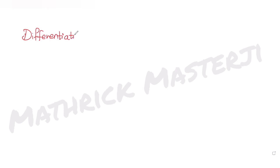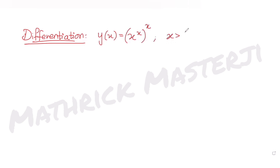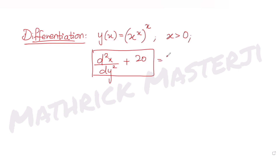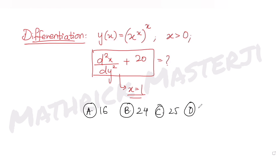Hi guys, I hope you are all doing well. Today's question is from the topic of differentiation. A function y(x) is equal to x raised to x, the whole raised to x, where x is positive. We have been asked to find the value of the expression d²x/dy² + 20 at x equals 1. The answer choices given are 16, 24, 25, and 36.